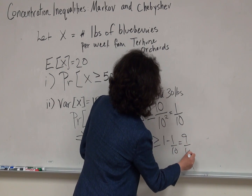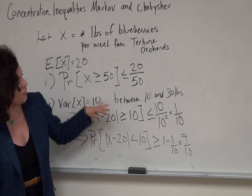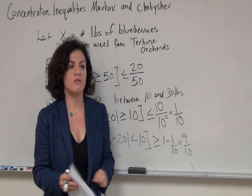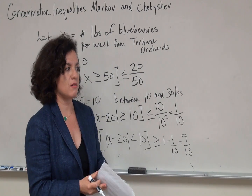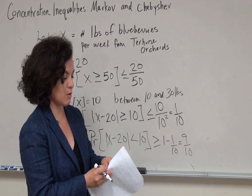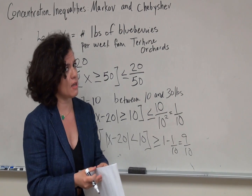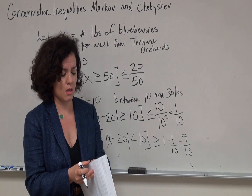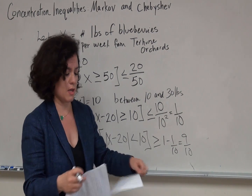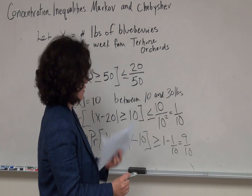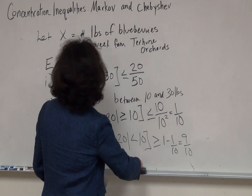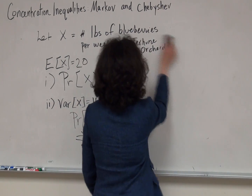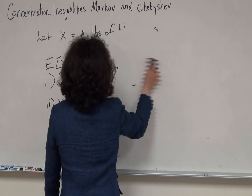Now we're going to do another example, and in this example we'll review calculating variance since we haven't covered that definition yet. We're going to be talking about balls and bins — once again, balls and bins.